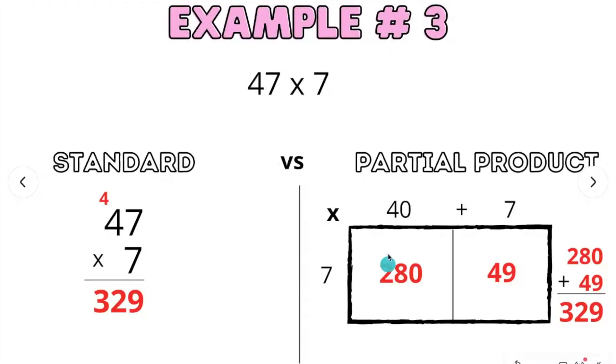Now let's look at it using the partial product. 47 is 40 plus 7 times 7, so 40 times 7 is 280. 7 times 7 is 49. We then add 280 plus 49 gives us 329.